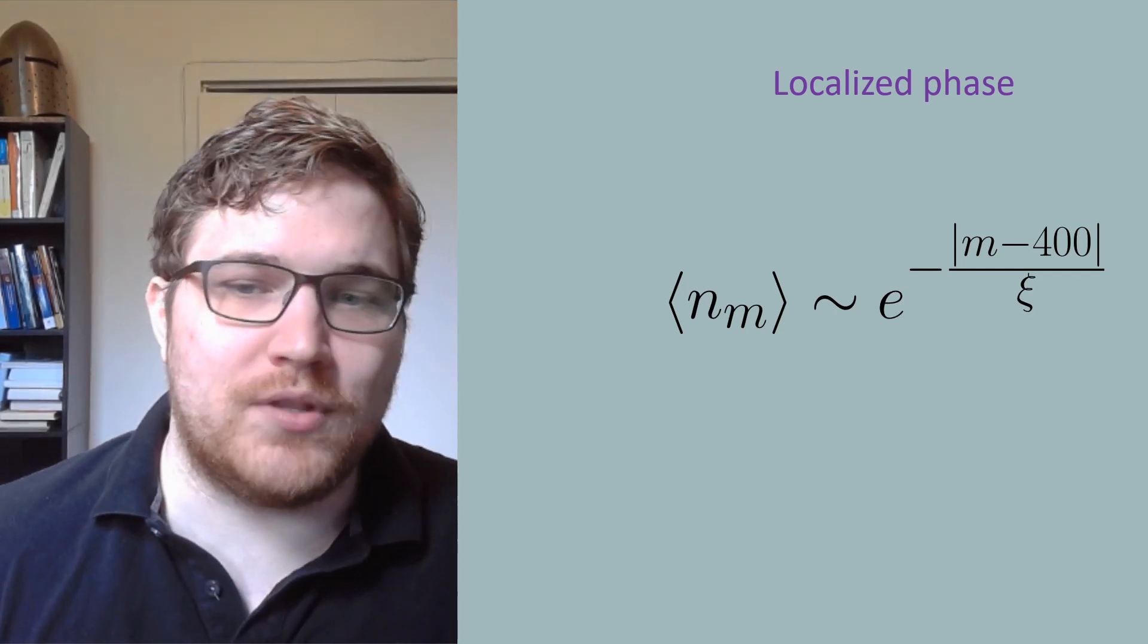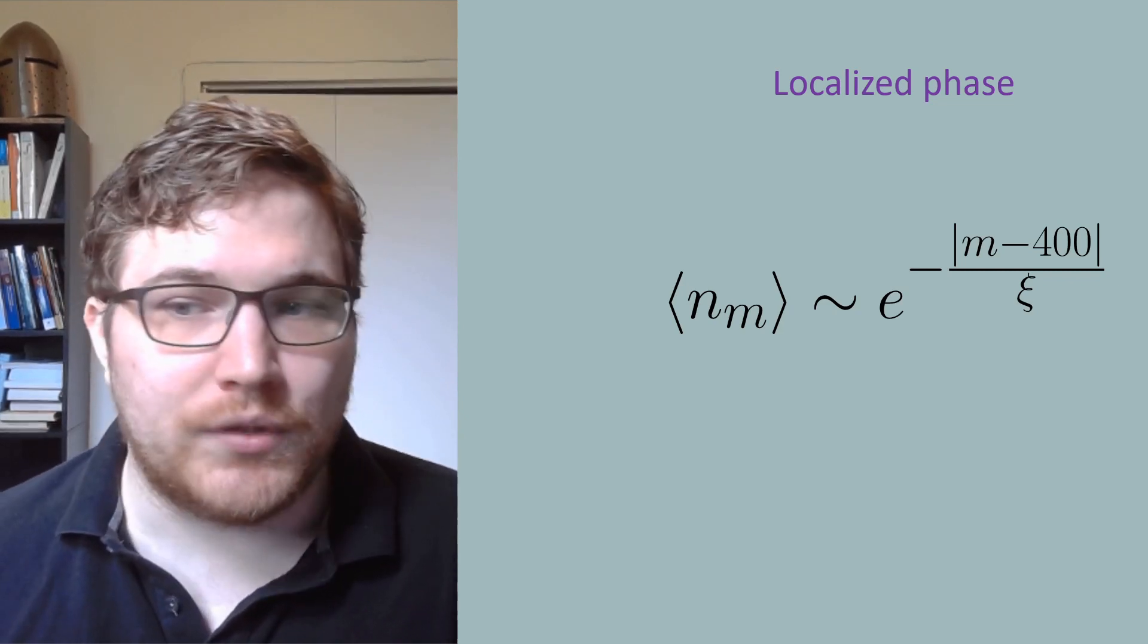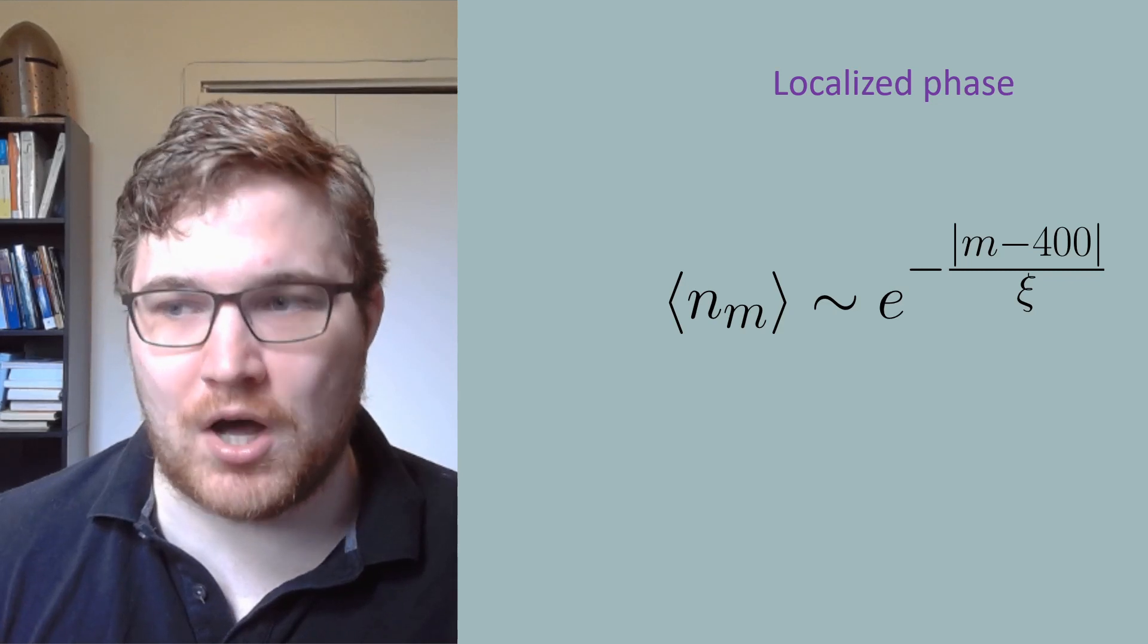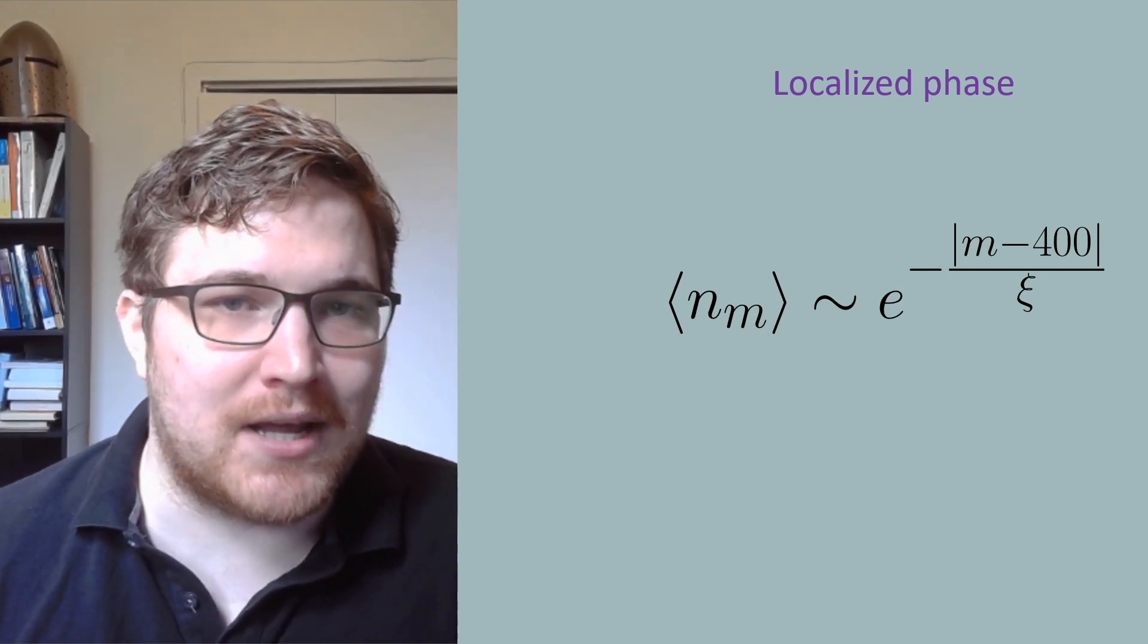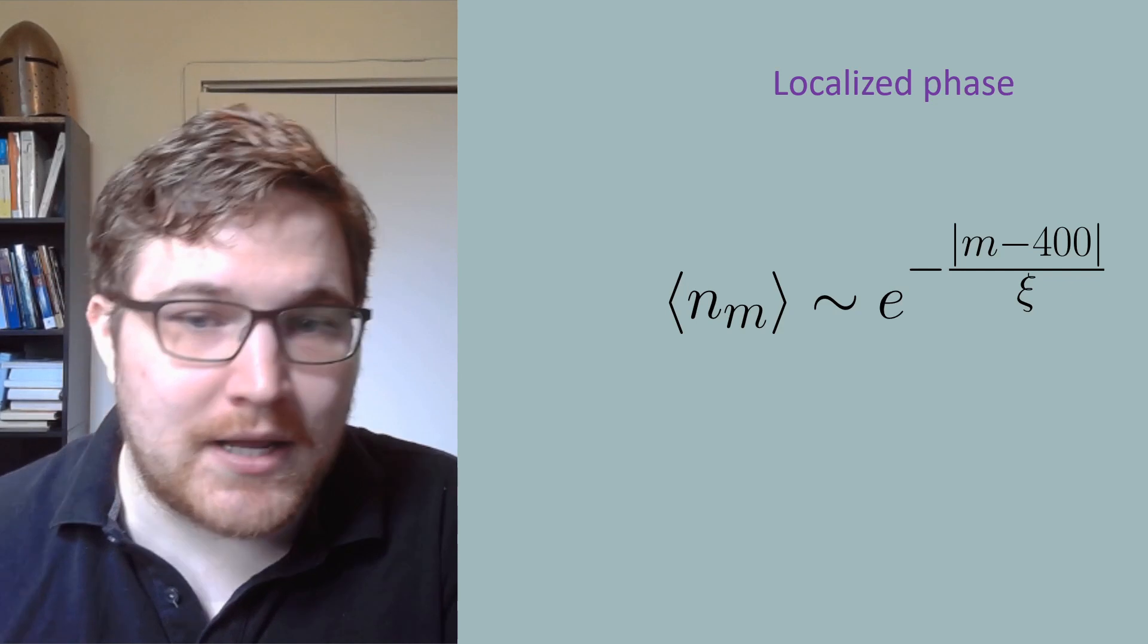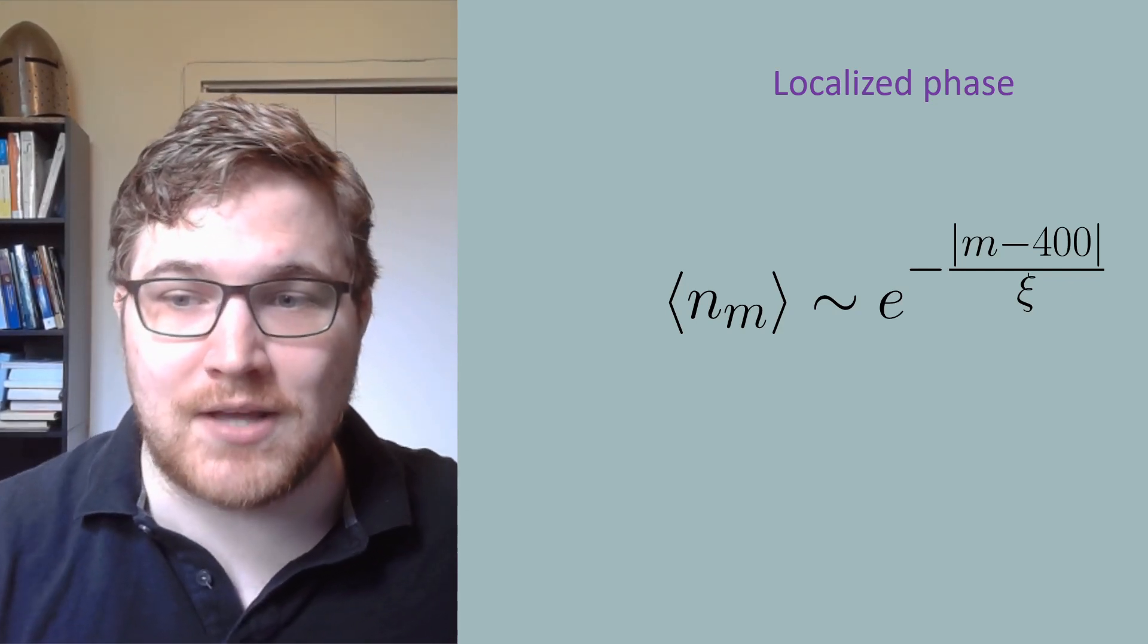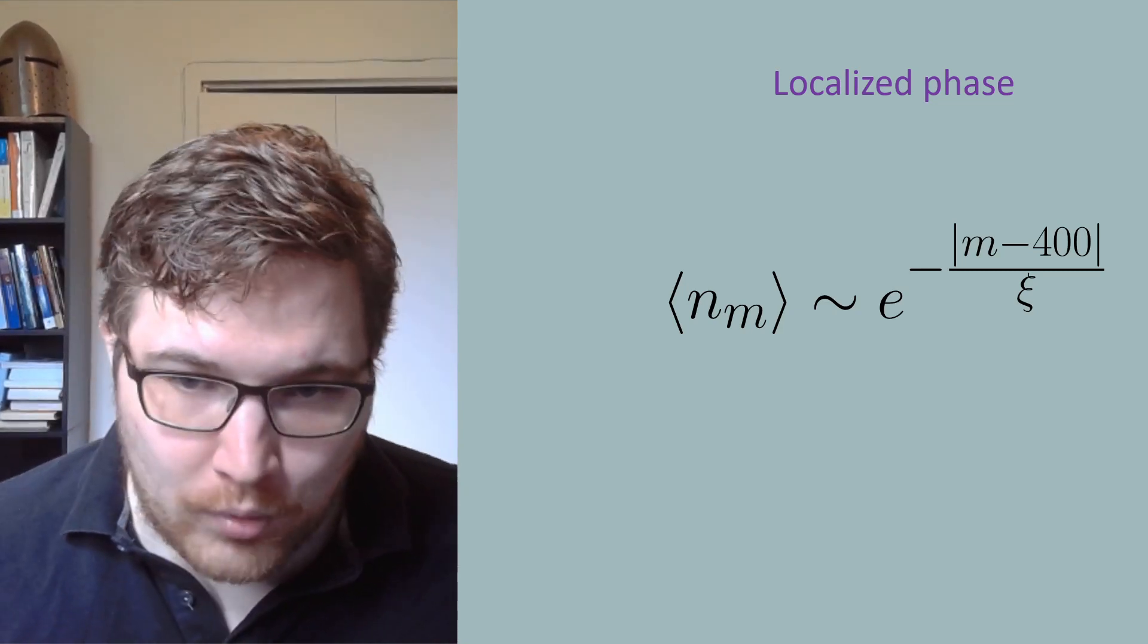This is due to the energy eigenstates being localized themselves. They only have support on an exponentially suppressed region of the lattice. This region is dictated by the correlation length xi and dictates how localized our system is.